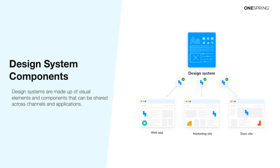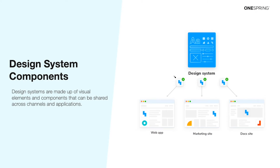A design system helps bridge this gap by standardizing and creating efficiencies in how individual design components are shared and organized. In this example, a component is being pulled from the design system and shared across channels and applications.